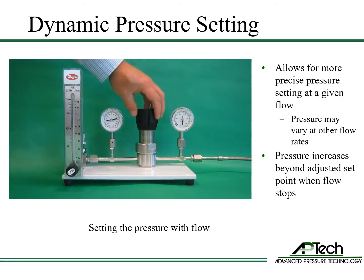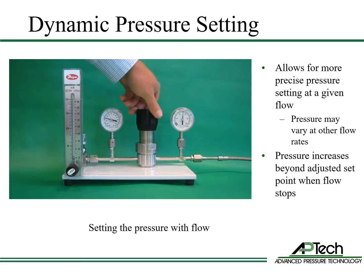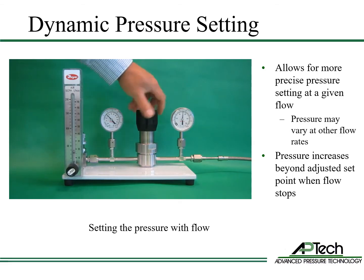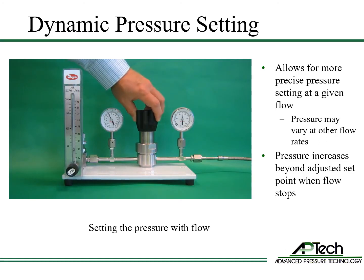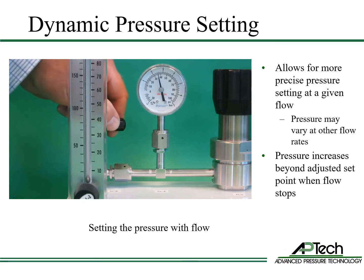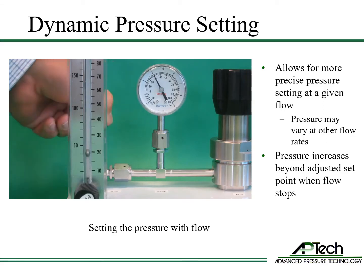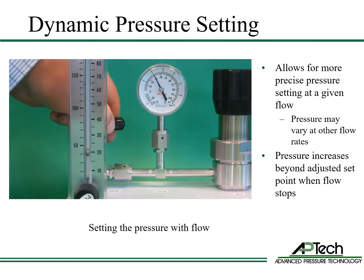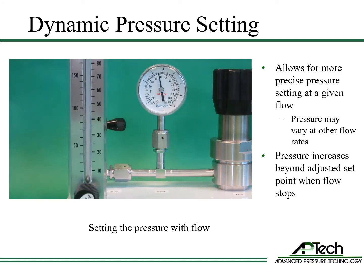Dynamic pressure setting means setting the outlet pressure with flow. This allows for a more precise pressure at a given flow. In this example, the regulator is set with a fixed flow downstream. When flow stops, the outlet pressure rises above the adjusted set point due to droop. If the flow rate changes later, the outlet pressure will vary.